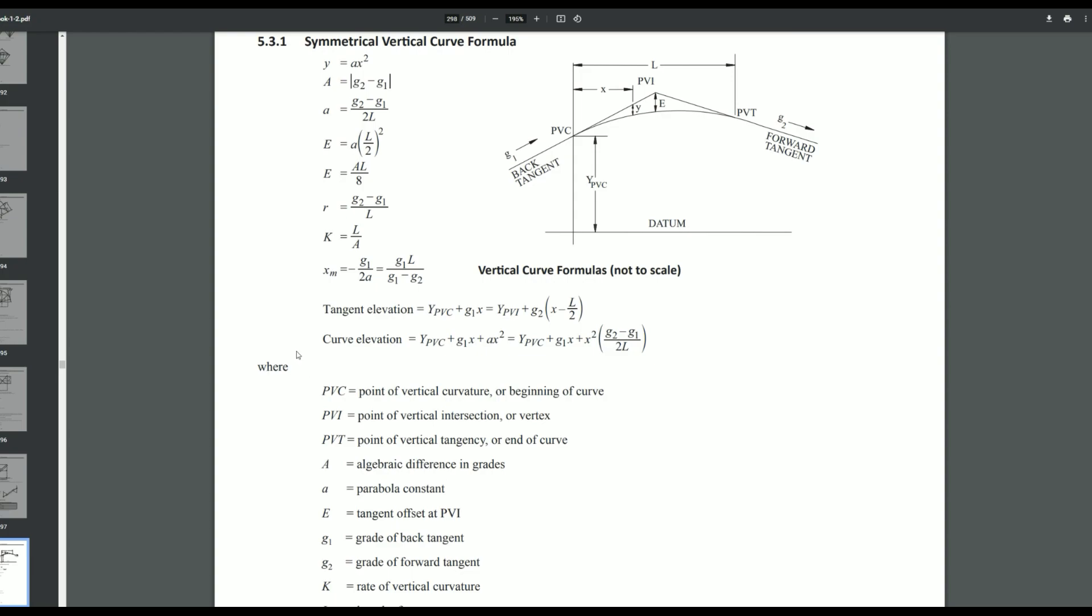But another kind of quicker way, which is going to be kind of important for this test anyways, you want to just get through problems quickly, we can use this equation right here instead, the curve elevation. So this equation right here gives us the elevation along our vertical curve at any point. Now if we take the derivative of this equation, it'll give us the slope at any point along the curve.